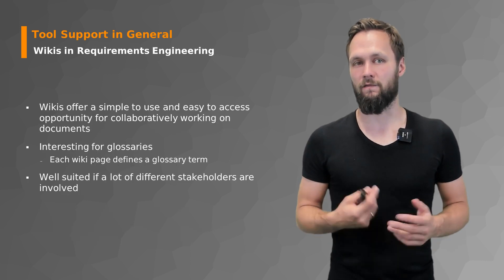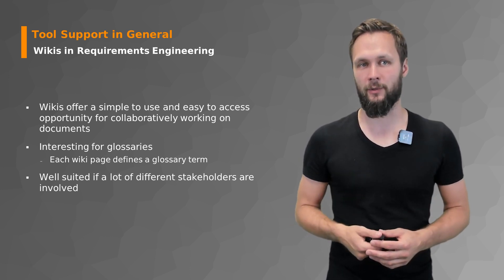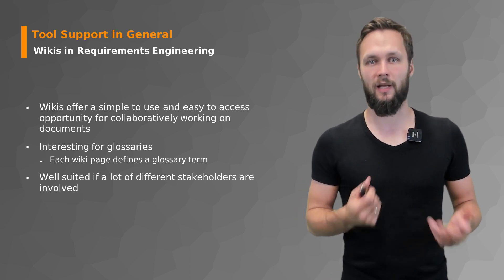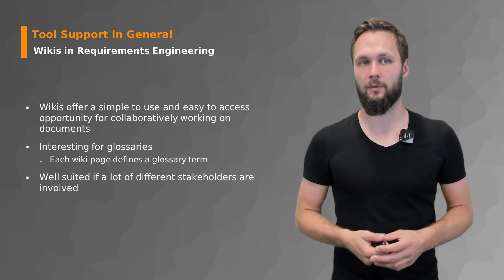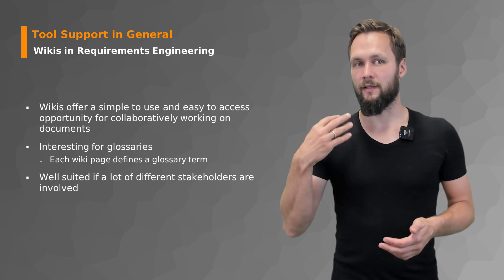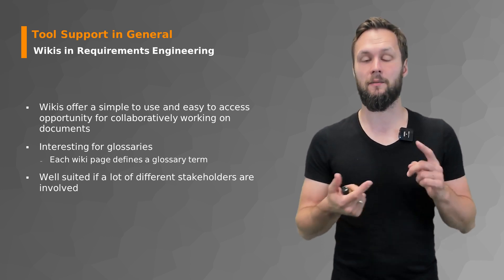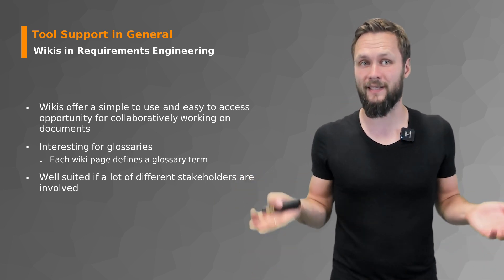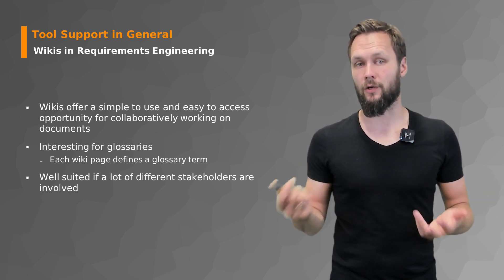Wikis are very popular and among the most basic tools that can aid collaboration and support the requirements engineering process. They offer a simple and easy-to-access opportunity for collaboratively working on documents — you can create different pages, different types of content, and a glossary. The glossary part is something where wikis really excel, because a glossary should be accessible to everyone, preferably online, and a wiki essentially provides that. It's very well suited for this use case, especially when you have many different stakeholders involved.